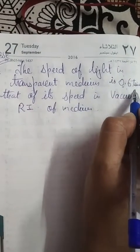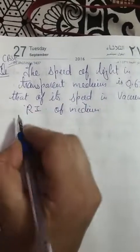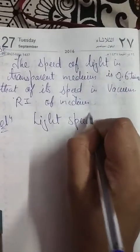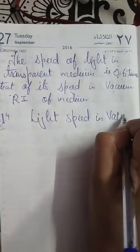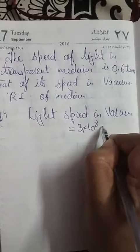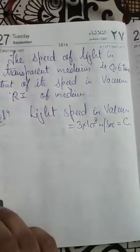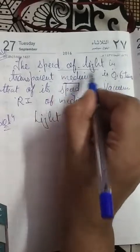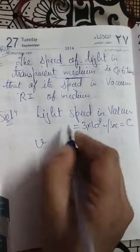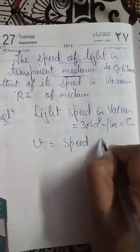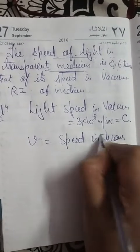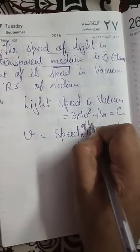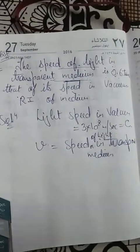The speed of light in vacuum is equal to 3 × 10⁸ meters per second, and let's call it c. The speed of light in the transparent medium, let's call it v, is given as 0.6 times the speed in vacuum.